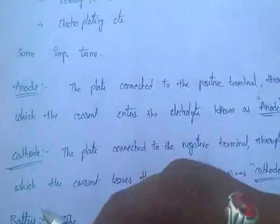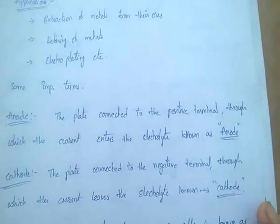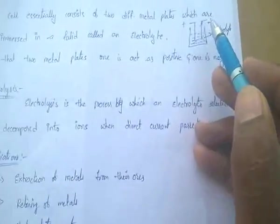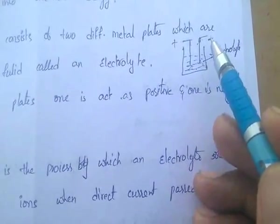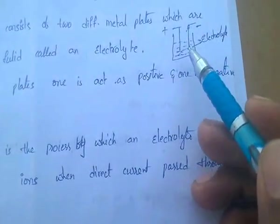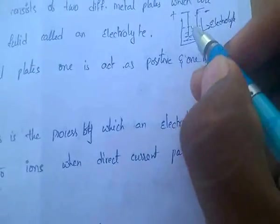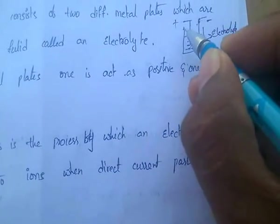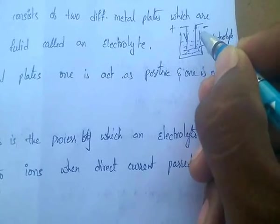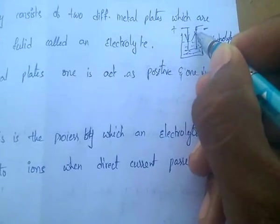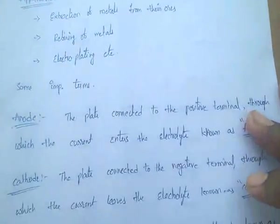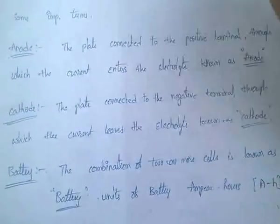Coming to the cathode: the cathode is the plate connected to the negative terminal, through which the current leaves the electrolyte. So from the anode the current enters the electrolyte, and from the cathode the current leaves the electrolyte.